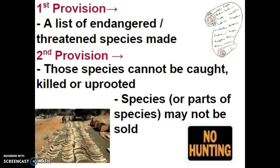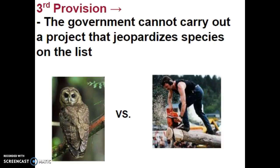This is usually the provision that is very difficult to carry out in other countries, especially developing countries. The third provision is that the government cannot carry out a project that knowingly jeopardizes species on the list. In the 1980s in the logging industry in the Pacific Northwest, the spotted owl was an endangered species housed in a section of forest that was to be taken down for development. There was a long and drawn-out process of trying to get the loggers to do their job without harming the spotted owl.